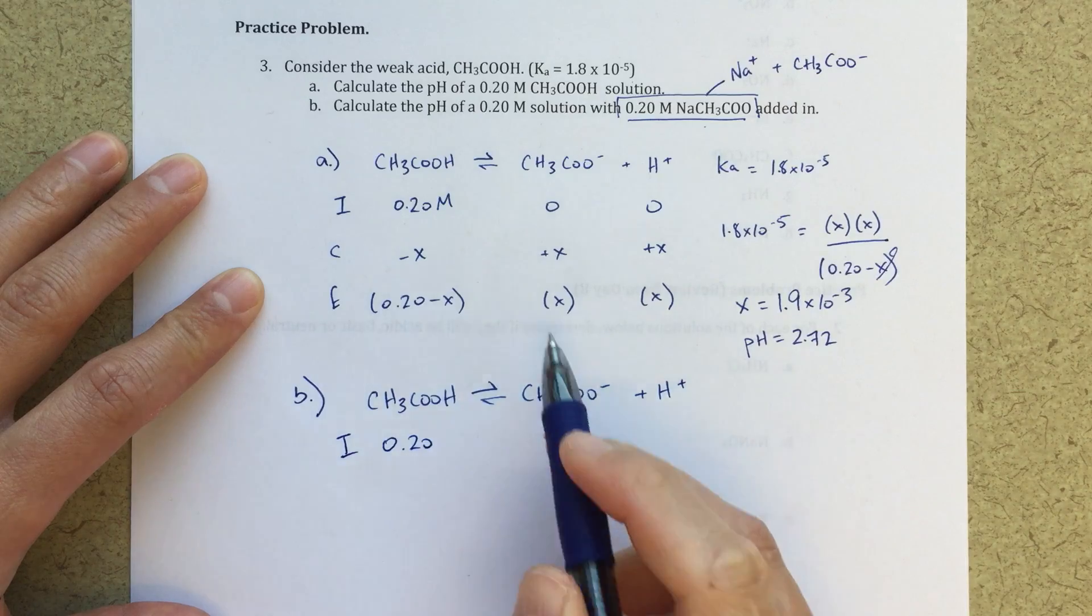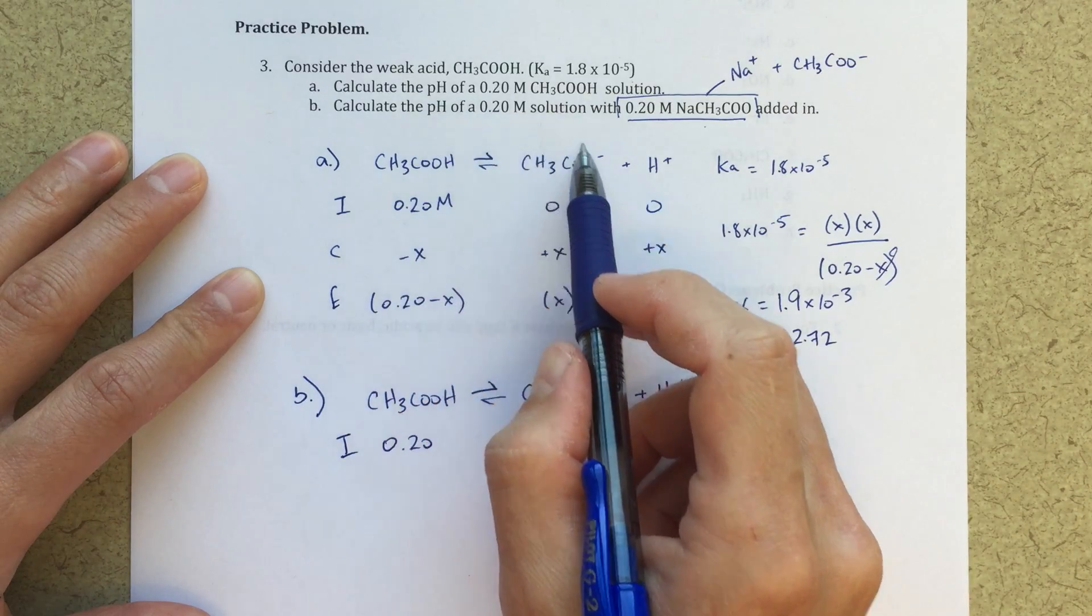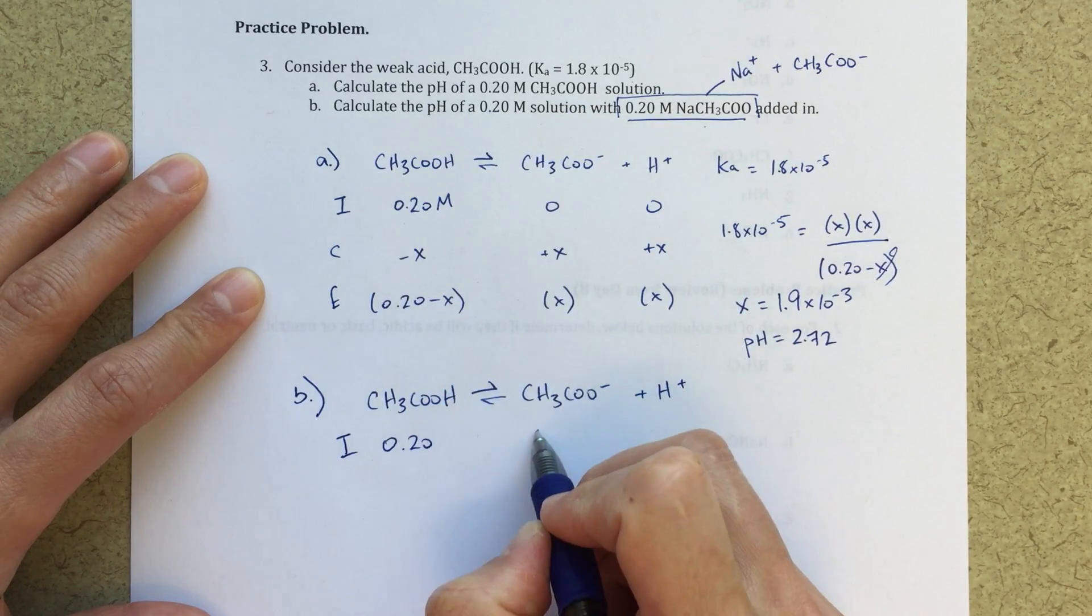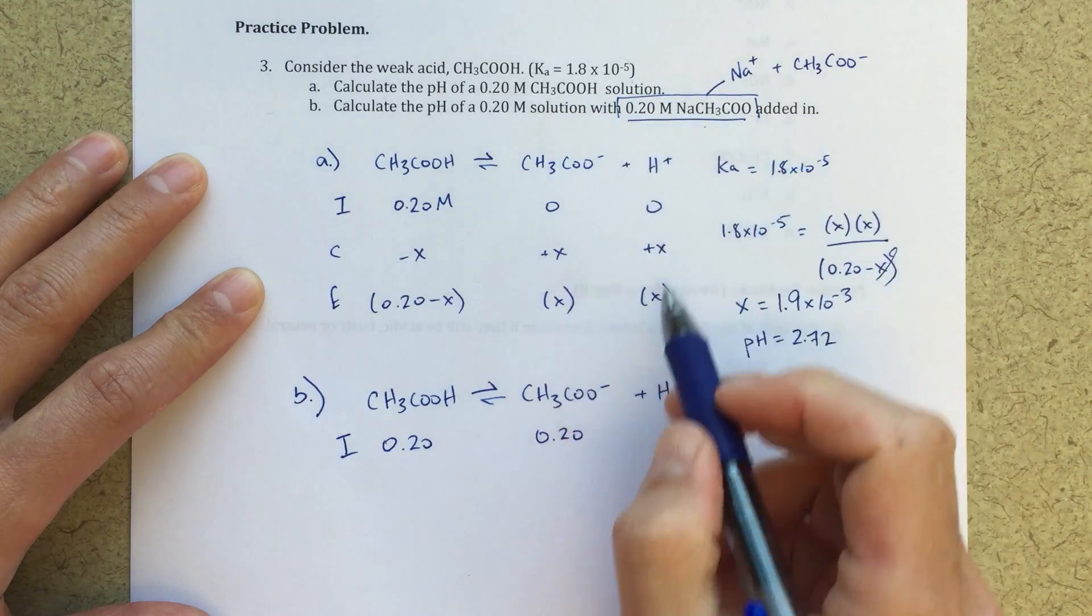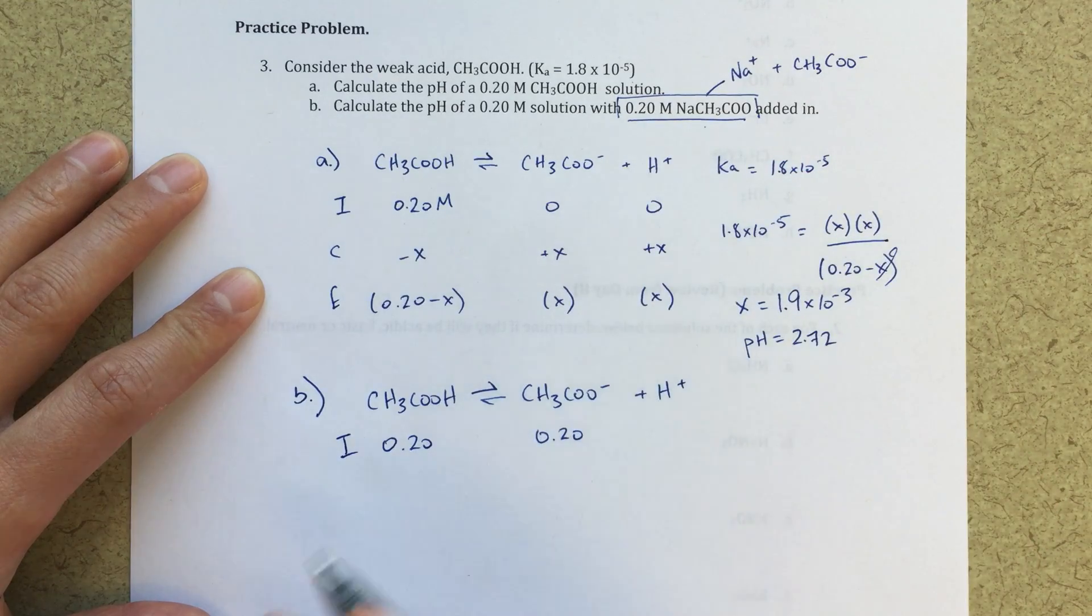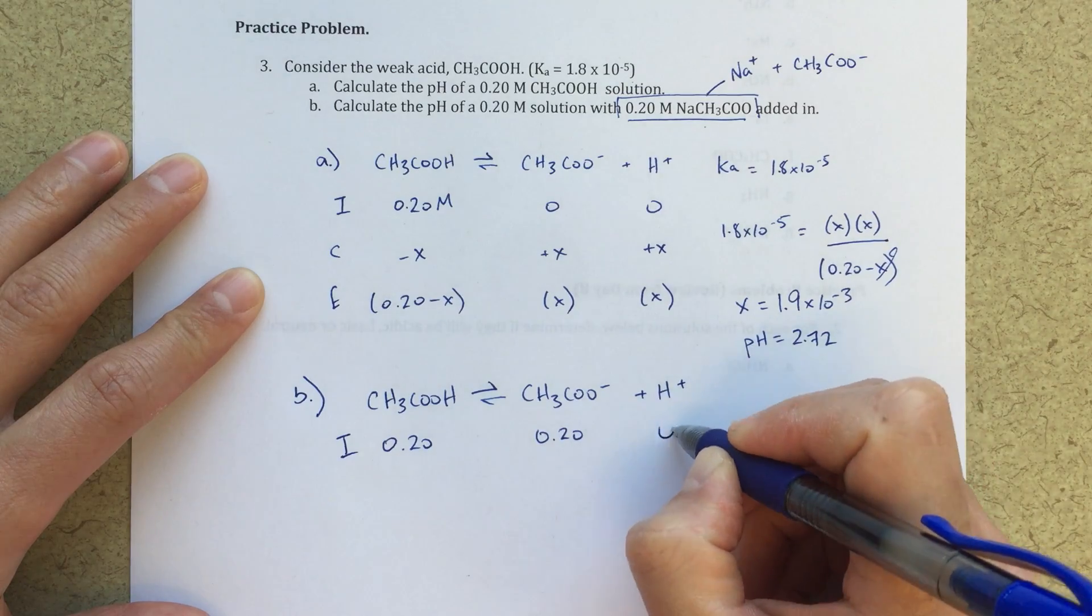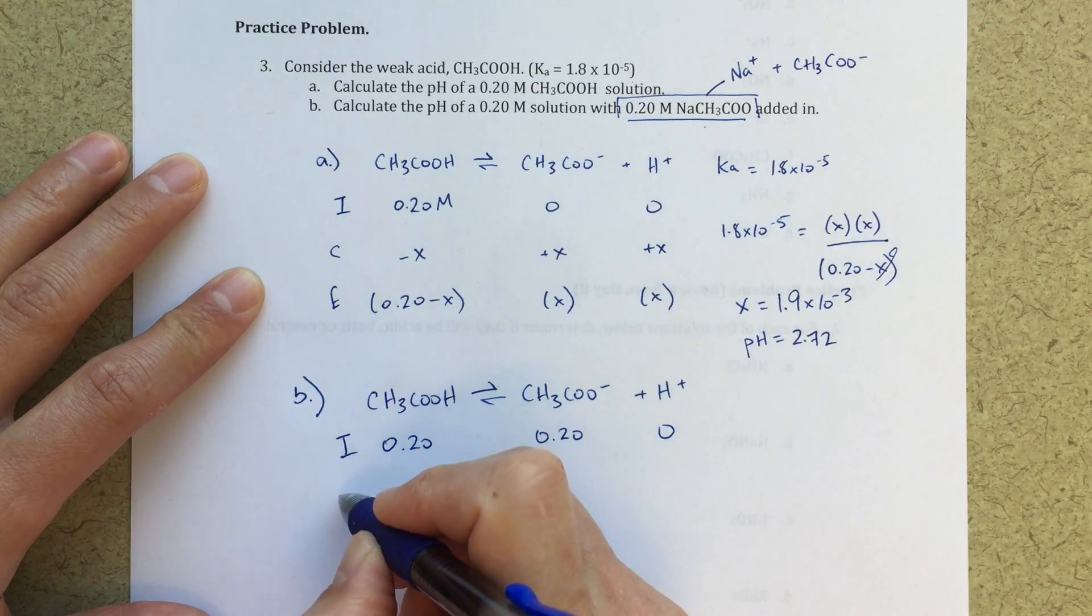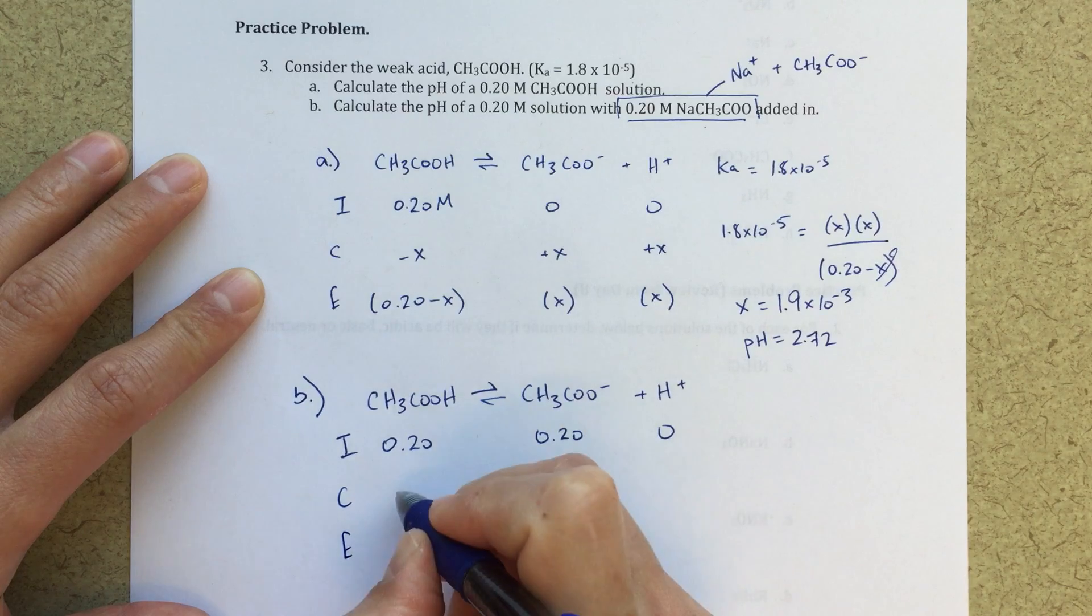So essentially what is going on here is that I'm going to have an initial concentration of this CH3COO minus. So my initial concentration, so calculate the pH of a 0.2 molar solution of my acetic acid, where I've got 0.2 molar CH3COO minus added in. That's going to be my common ion that's added in.